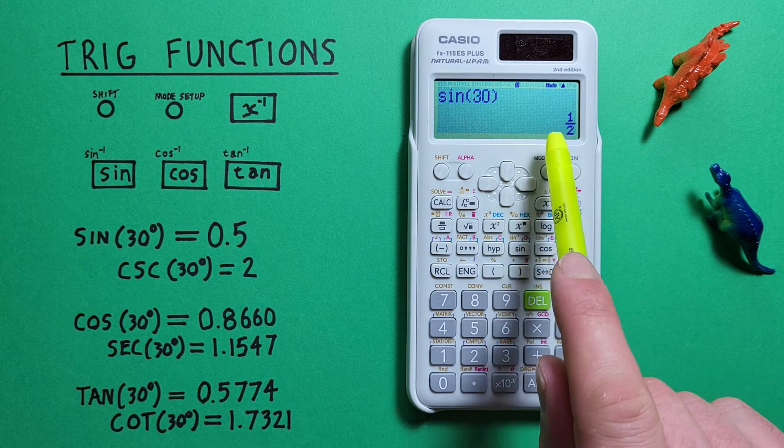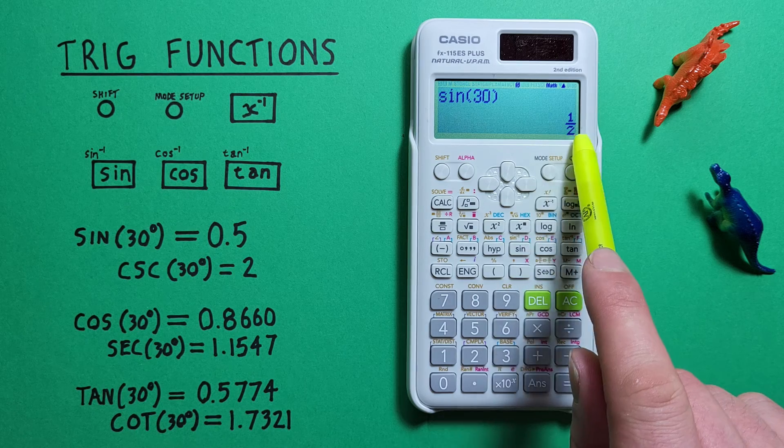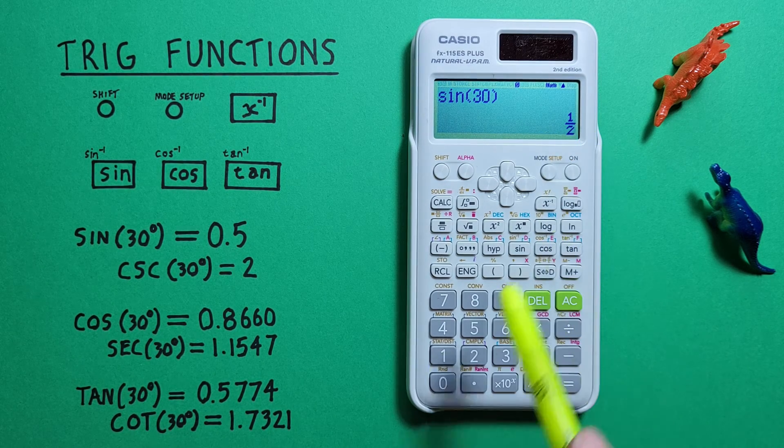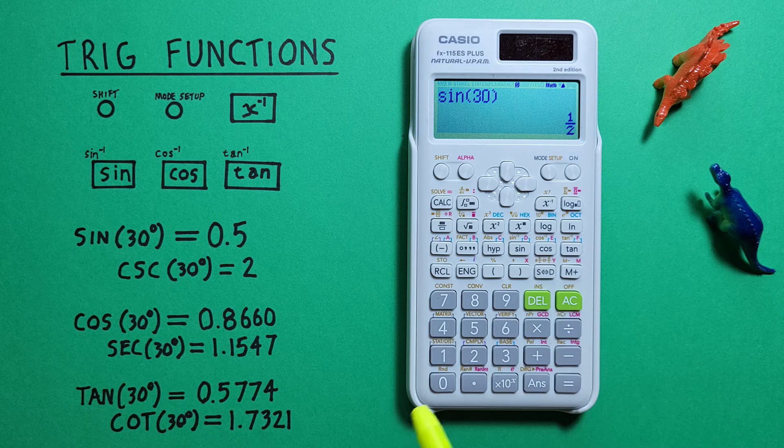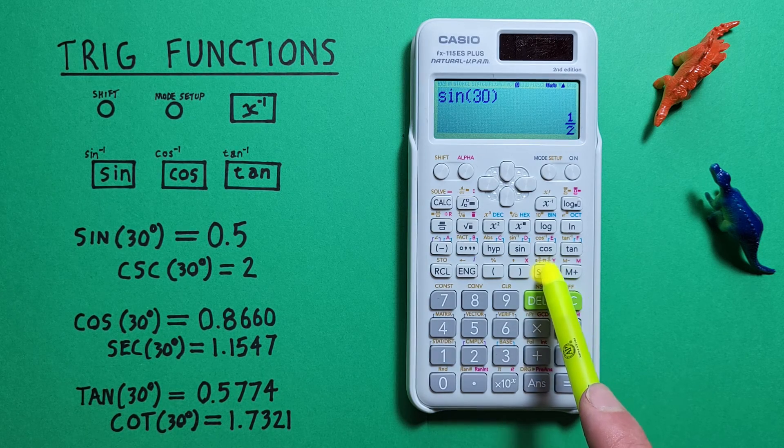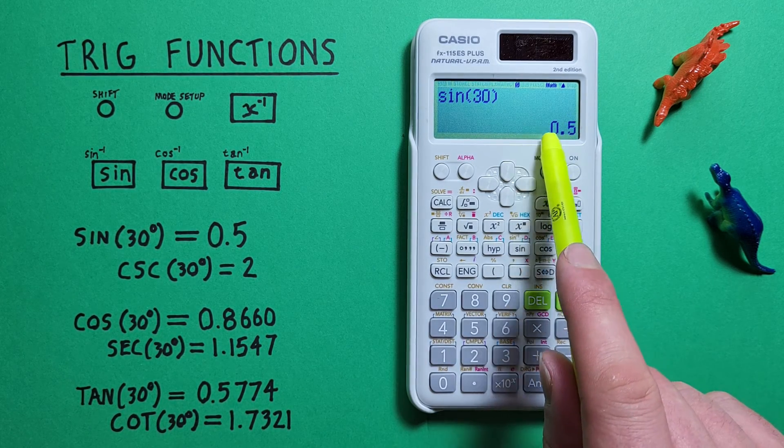And this calculator likes to give our results in fractions so we get a result of 1 over 2, which if we want to convert to a decimal we can use this s to d key and get a result of 0.5.